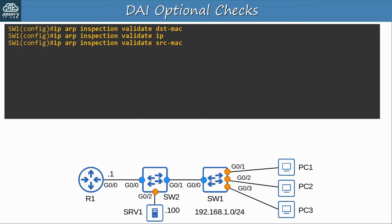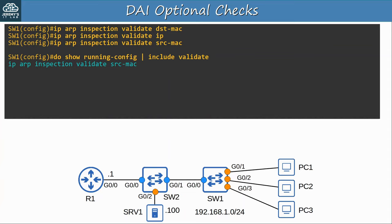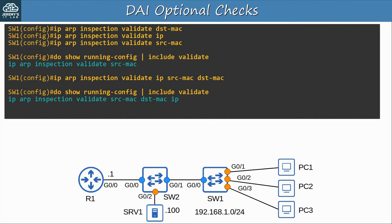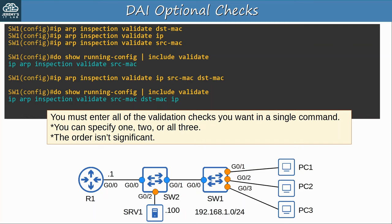Note that these checks are done in addition to the standard DAI check which looks at the sender MAC and IP addresses against the DHCP snooping binding table. So if these checks are configured, an ARP message must pass all of them to be considered valid. There's an important point about configuring these checks: if you configure them one at a time, each new command overwrites the previous one. To enable all three checks, you must configure them in a single command: ip arp inspection validate ip src-mac dst-mac. You can specify 1, 2, or all three, and the order isn't significant.